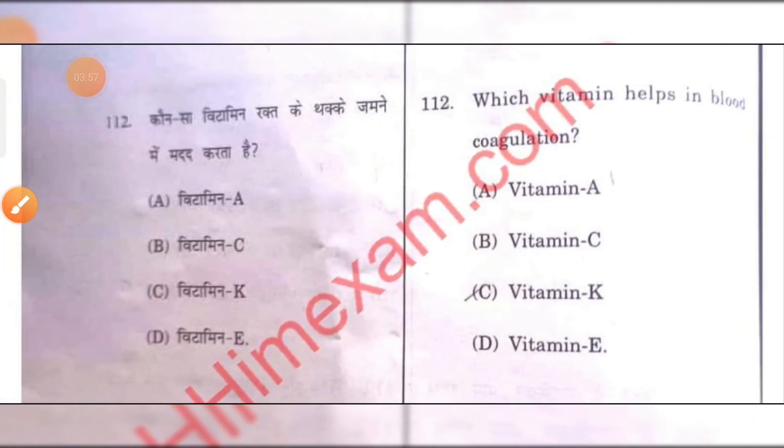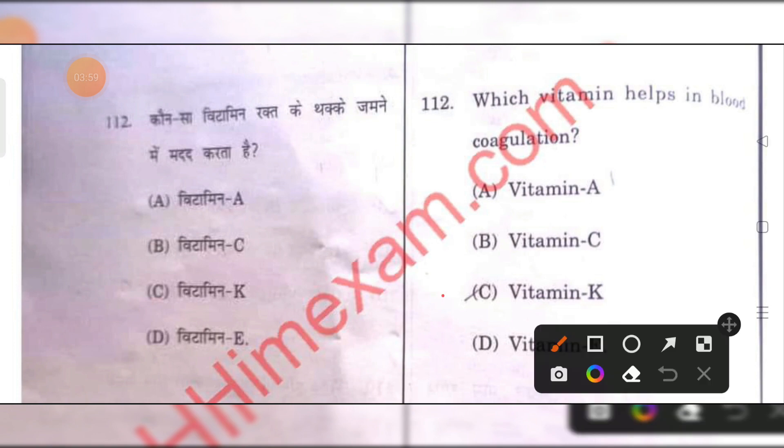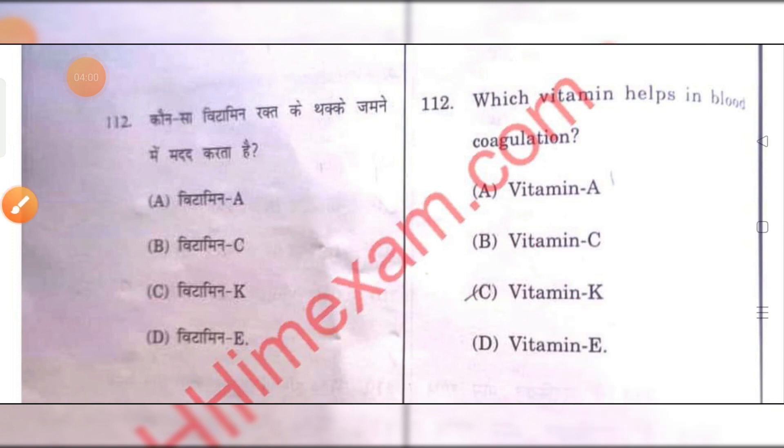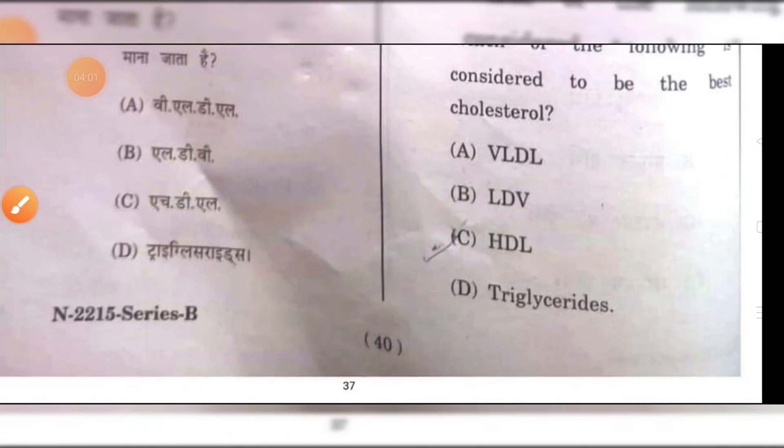Which vitamin helps in blood coagulation? Vitamin K. C is the right answer.